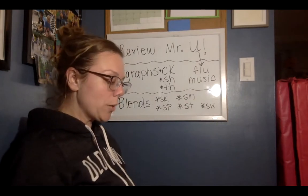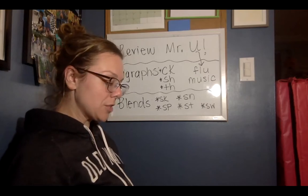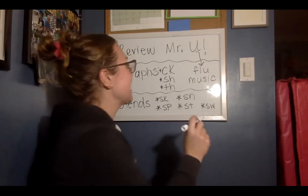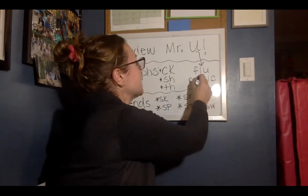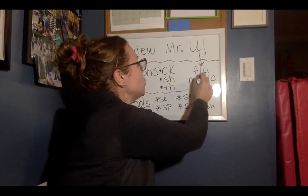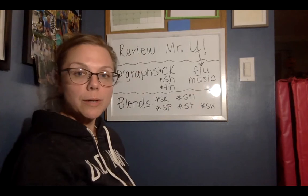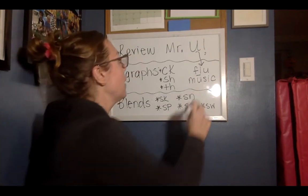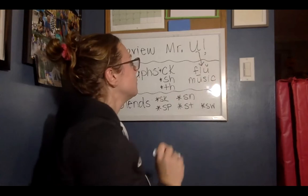We call it an open syllable if there's a straight line and he says his name. So when he says music, he says U — music. But if here he says OO — slew.